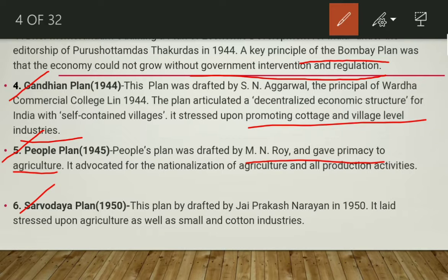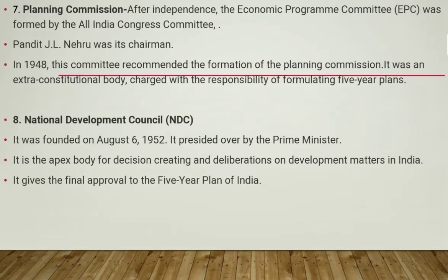The Sarvodaya Plan was drafted by Jai Prakash Narayan in 1950. The plan emphasized agriculture and small cottage industries. Importantly, this plan also recommended the formation of the Planning Commission. So the Sarvodaya Plan, drafted by Jai Prakash Narayan in 1950, helped create the framework for the formation of the Planning Commission.